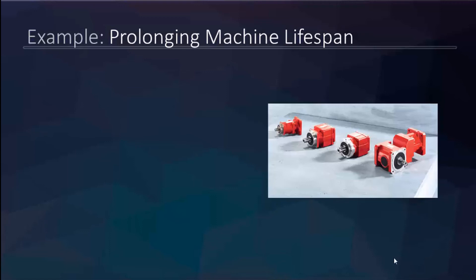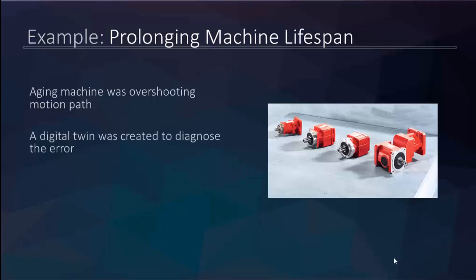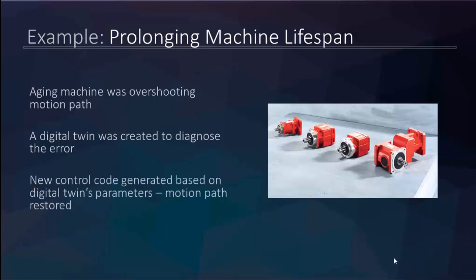Let me close with two examples. First, a customer had a handful of machines that were overshooting their motion path as they aged and they wanted to see if there was a fix. We helped them create a digital twin, fed in sensor data from their aging machine, and built a digital twin reflecting the machine in its current aged state. We then recalibrated the motion controllers to get it ending in the right spot, recreating the control code based on the digital twin's model — something you can't do from standard motor specifications for a machine that's aged under specific conditions.